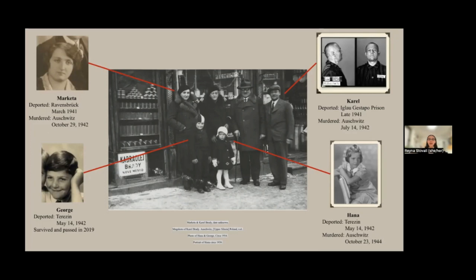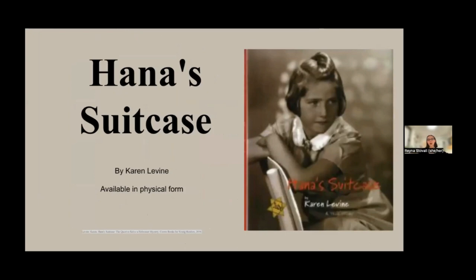Her husband Carol and daughter Hannah were also murdered in Auschwitz in 1942 and 1944 respectively. The only member of their family to survive was George, who eventually immigrated to Canada, where he passed away in 2019. Despite the fact that the entire family has now passed away, there are a lot of items that remain from their life, such as Marketa's letter, but also the suitcase that Hannah had carried with her on her way to the camps. The suitcase was eventually taken to the Tokyo Holocaust Museum, where staff did really in-depth research into her life and turned it into the bestselling children's book Hannah's Suitcase, which is available through the San Antonio Public Library.